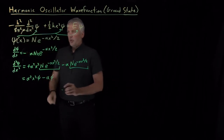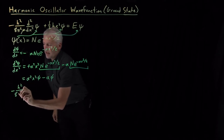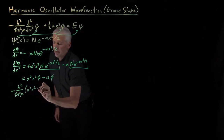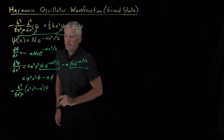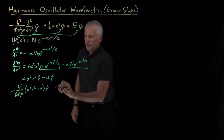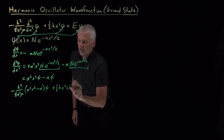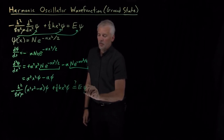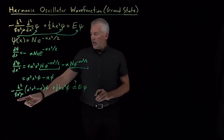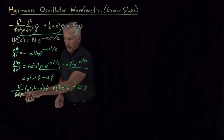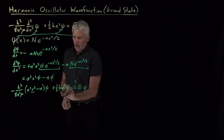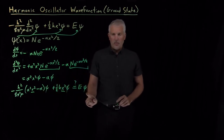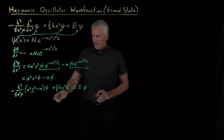When we plug into Schrödinger's equation, it becomes: negative h squared over 8 pi squared mu, times the second derivative (alpha squared x squared minus alpha) times psi, plus one-half k x squared times psi, and that should equal energy times the wave function. We've got constants times x squared times psi, and other terms that look like constants times wave function. Collecting terms with similar powers of x: